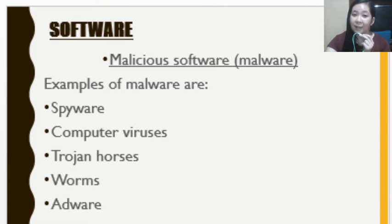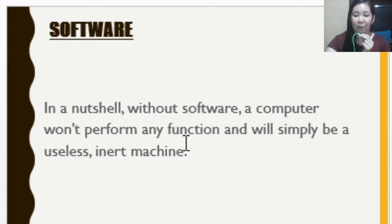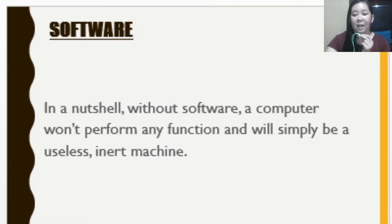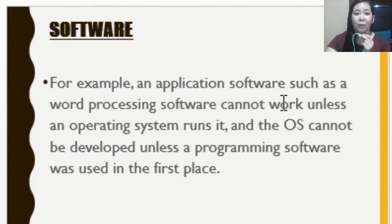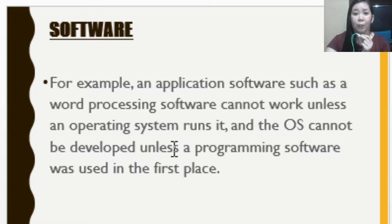We normally get malware from the internet when we visit certain websites that contain it. In a nutshell, without software a computer won't perform its function and will simply be a useless machine. Software are a very important part for us to use and efficiently use the computer. Different types of software also exist in direct mutual relations — for example, word processing software cannot work unless an operating system is running, and the OS cannot be developed unless programming software was used in the first place.